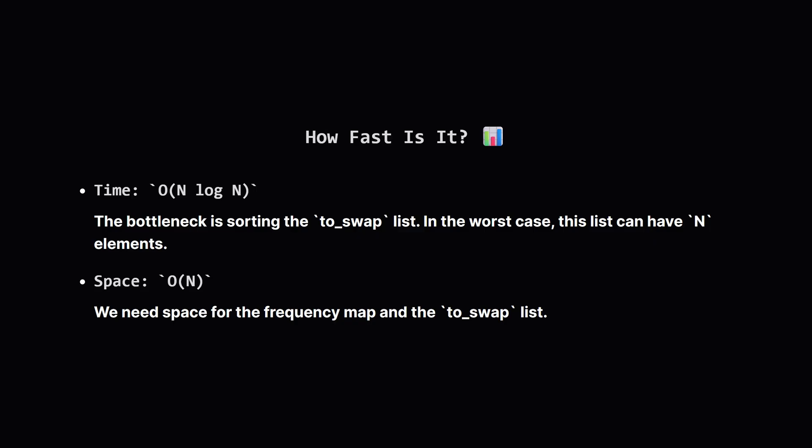So how efficient is this solution? The main performance hit comes from sorting our list of fruits to swap. If n is the total number of fruits, this takes big O of n log n time. In terms of space, we need to store the frequencies and that same swap list, which could take up to big O of n space in the worst case.